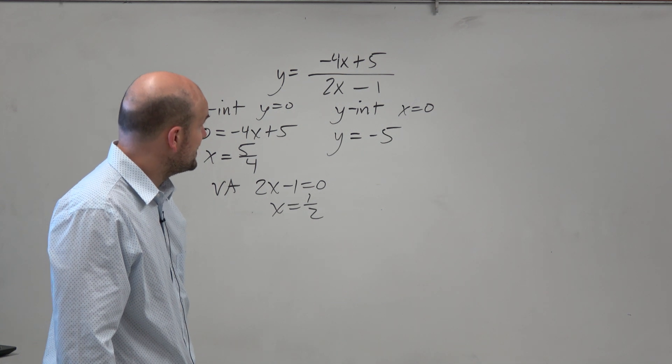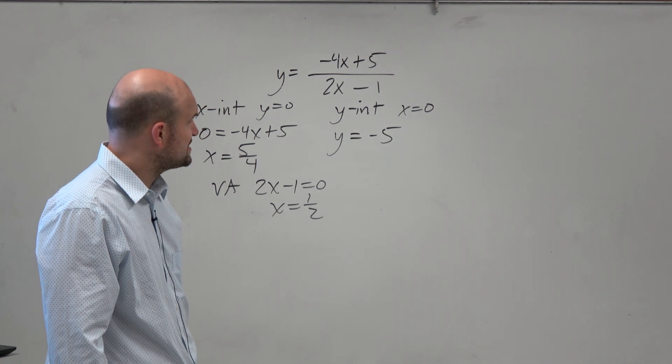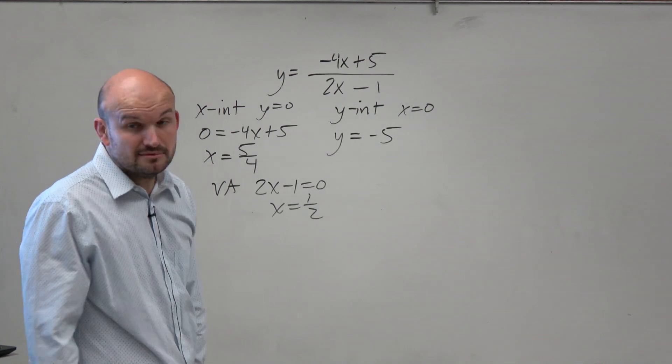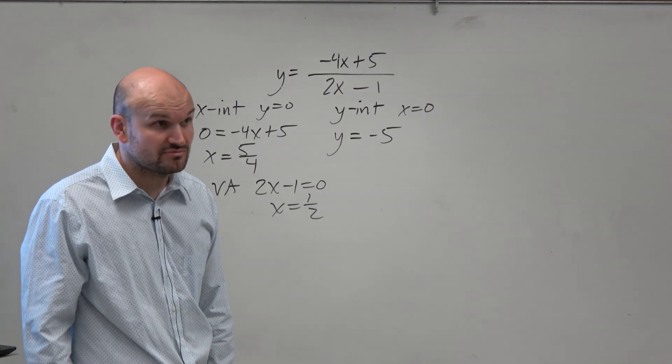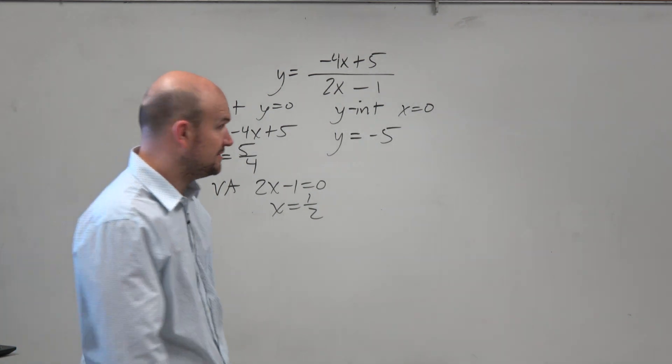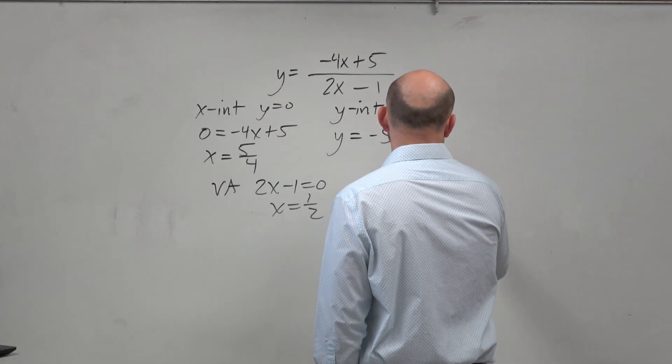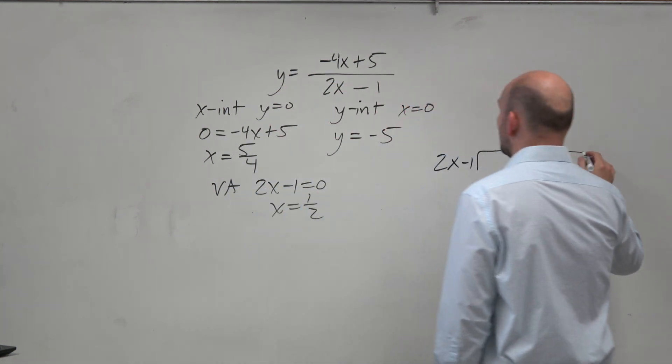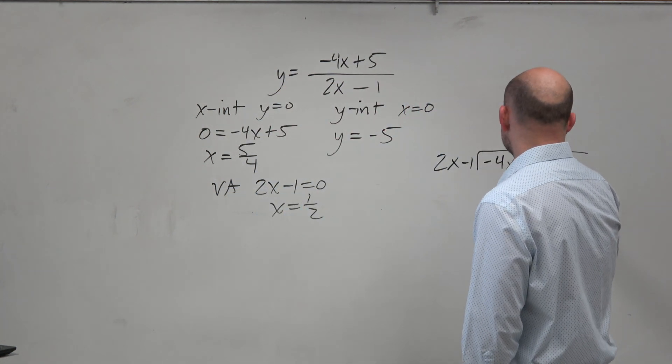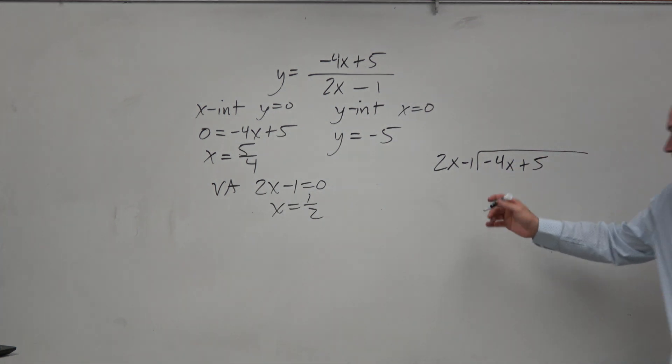So therefore, can I divide 2x minus 1 into negative 4x plus 5? I don't know. But I did learn how to do division last chapter, right? Or at least I refreshed that. So let's try it. See what happens. I mean, let's pretend I'm taking a quiz. I have no other options. Might as well try it.